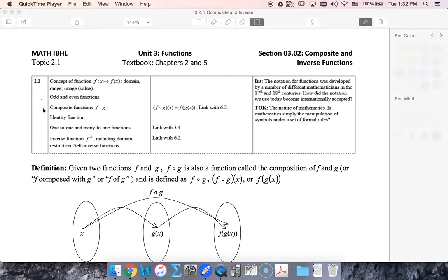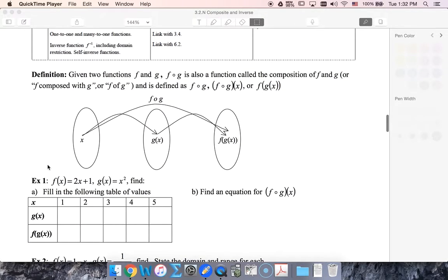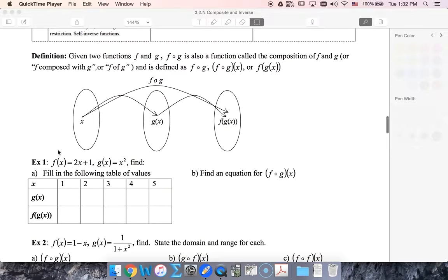So now we're going to look at composite functions and inverse functions. So when we take two functions and compose them, what we're really doing is taking one function and then putting it inside of another. So we call this f of g, we could also write it in this way, so f of g, or we could say f of g of x, or f∘g of x.